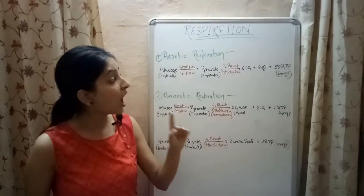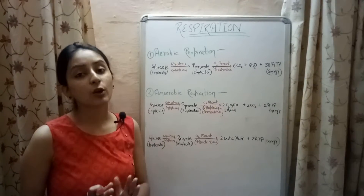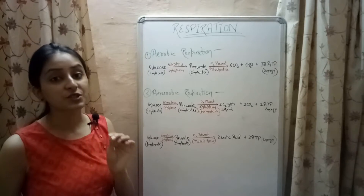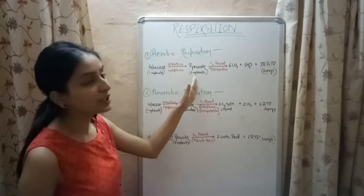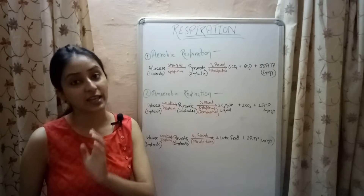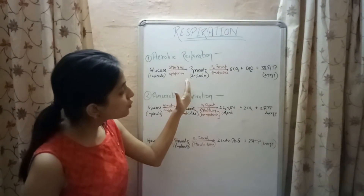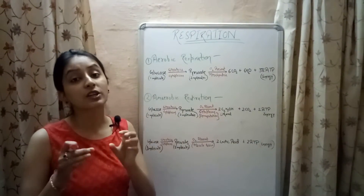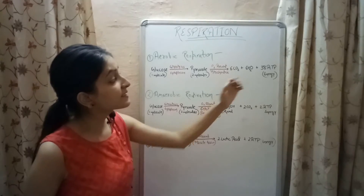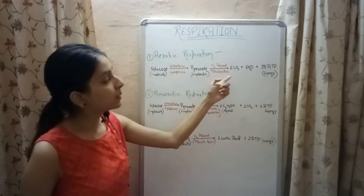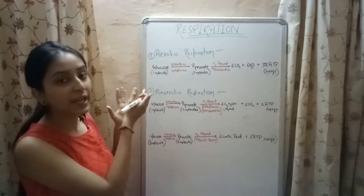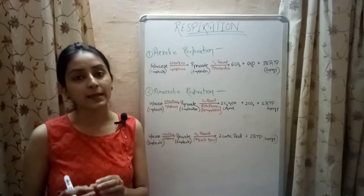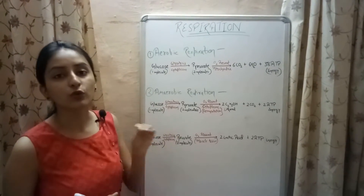When oxygen is present, one molecule of glucose through a process called glycolysis, which takes place in the cytoplasm, produces two molecules of pyruvate or pyruvic acid. These two molecules of pyruvic acid are further broken down in the mitochondria by a process called the Krebs cycle and releases 38 molecules of ATP along with carbon dioxide and water. This process is called aerobic respiration — the type in which complete breakdown of glucose takes place with the release of 38 molecules of ATP.